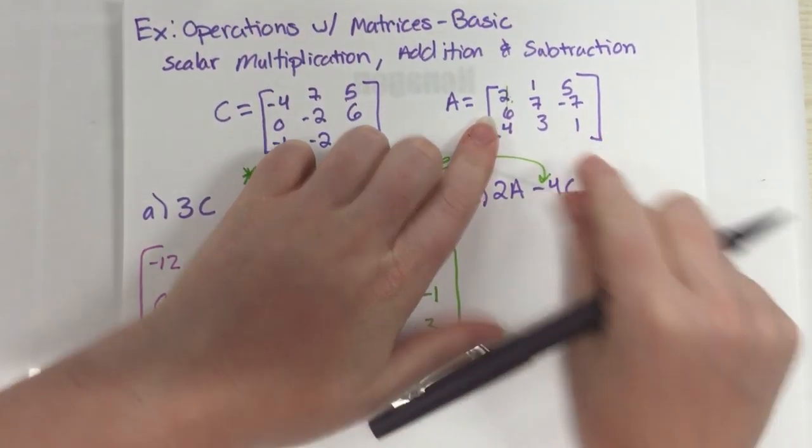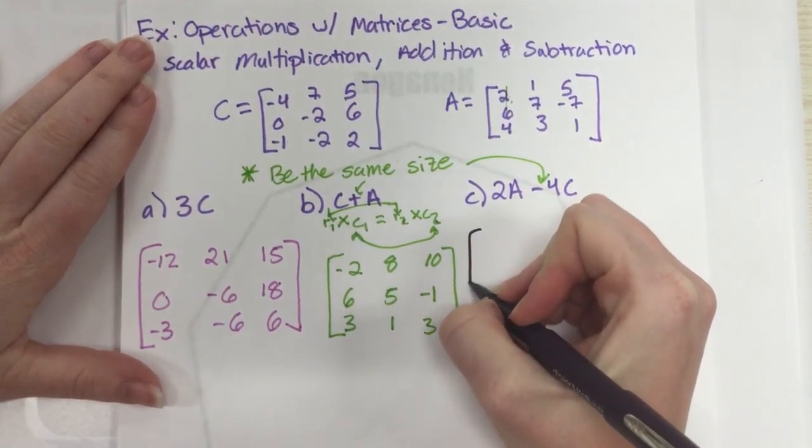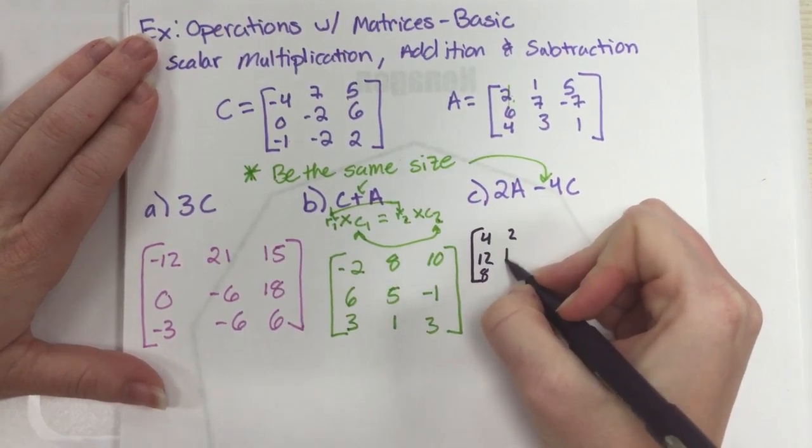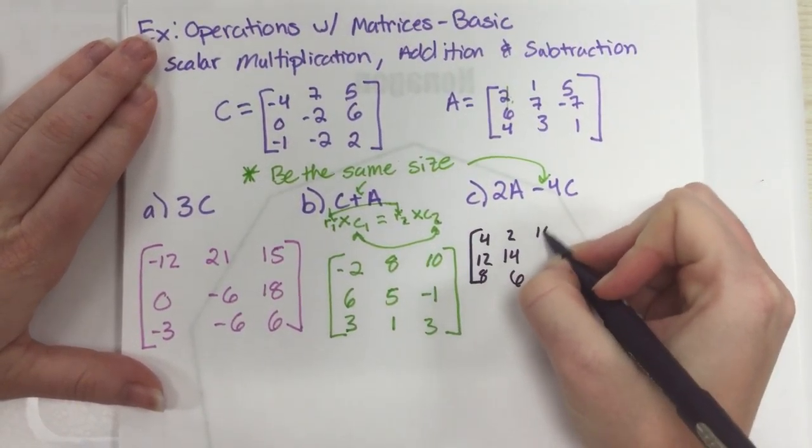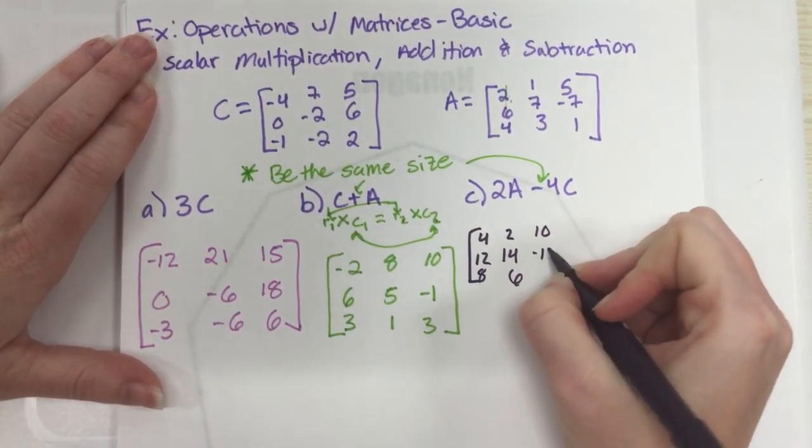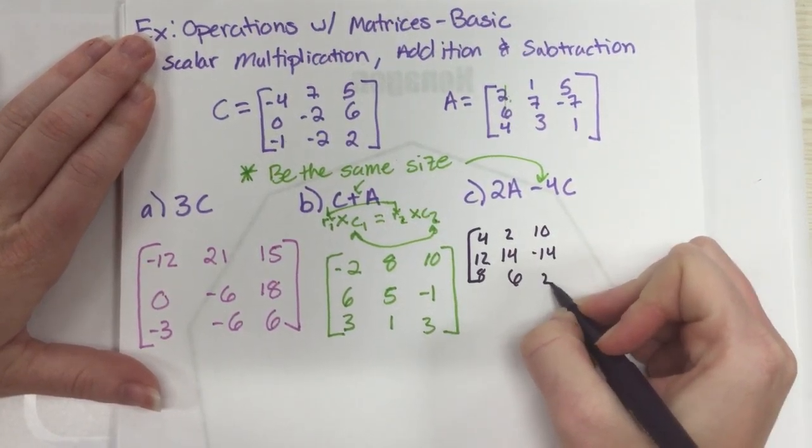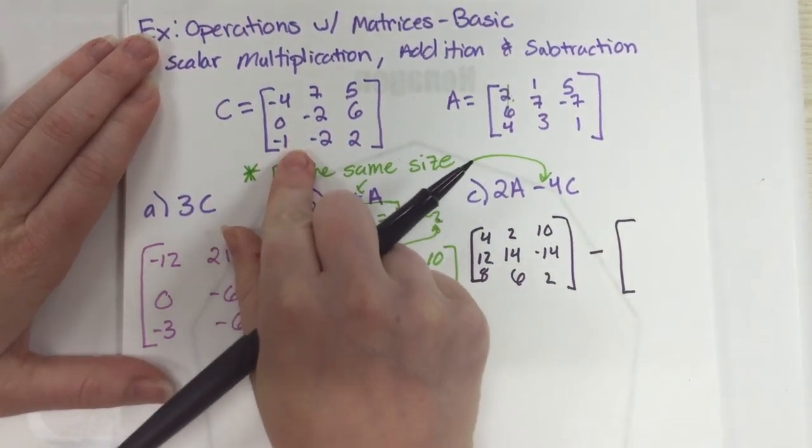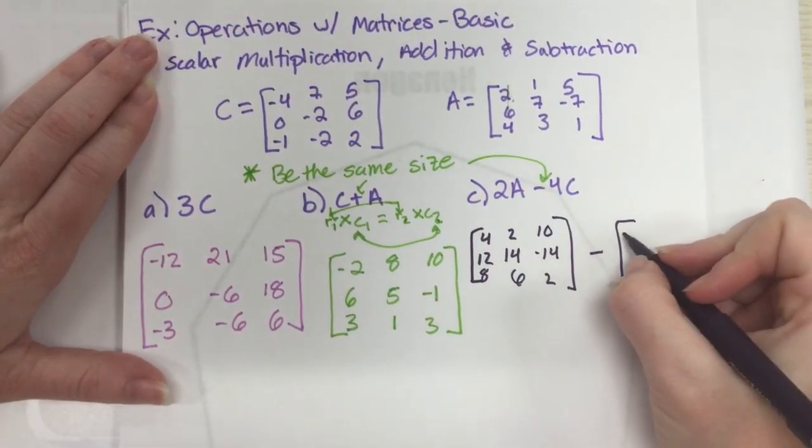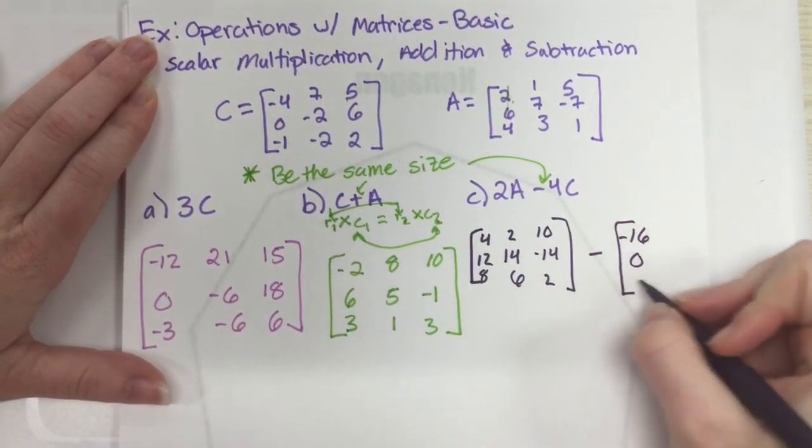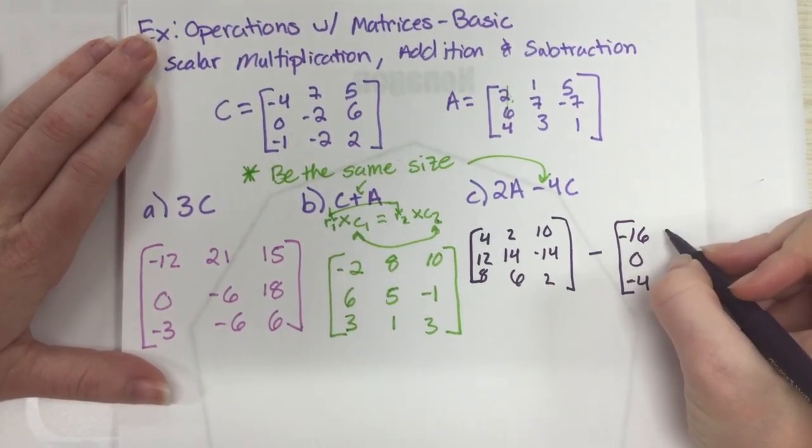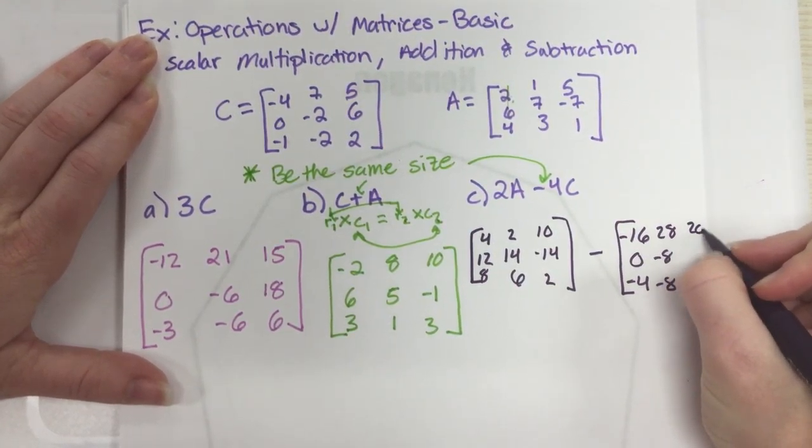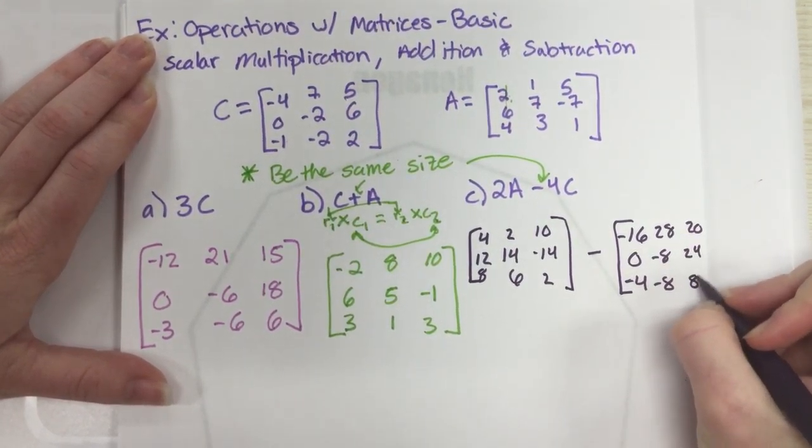So 2A means I got to double everything in here. So I get 4, 12, 8, 2, 14, 6, 10, negative 14, and 2. And then minus 4C means I got to quadruple everything in that. So negative 16, 0, negative 4, 28, negative 8, negative 8, 20, 24, and 8. And I'm kind of running out of room.